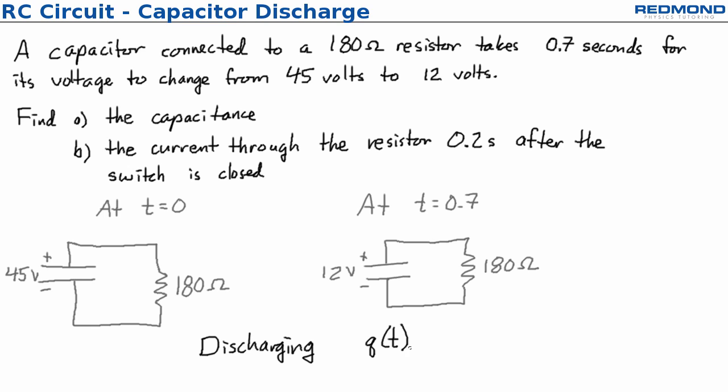So we get q across the capacitor as a function of time is equal to the initial charge q₀ times e to the negative t over RC.